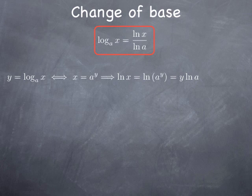We know that one of the logarithmic laws is that if we have the natural log of a power, we can pull out the exponent as a multiplicative constant. So this gives us ln(x) = y · ln(a). Solving for y, we get y = ln(x) / ln(a). But y was really just log of base a of x, so that establishes our formula.